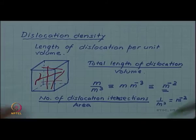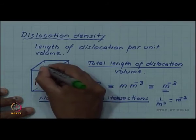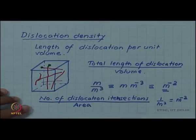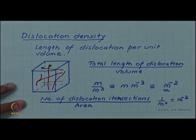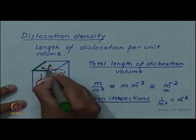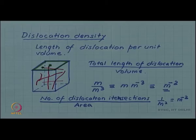Here essentially what we are doing is counting, suppose this is a test surface, the number of dislocations which are intersecting that surface and we divide by the area of the test surface. Both definitions are used and statistically the two are related.